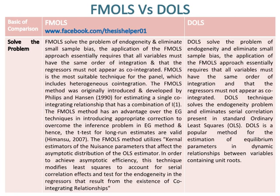The FMLS method utilizes kernel estimators of the nuisance parameters that affect the asymptotic distribution of the OLS estimator. In order to achieve asymptotic efficiency, this technique modifies least squares to account for serial correlation effects and tests for endogeneity in the regressors that result from the existence of cointegrating relationships.